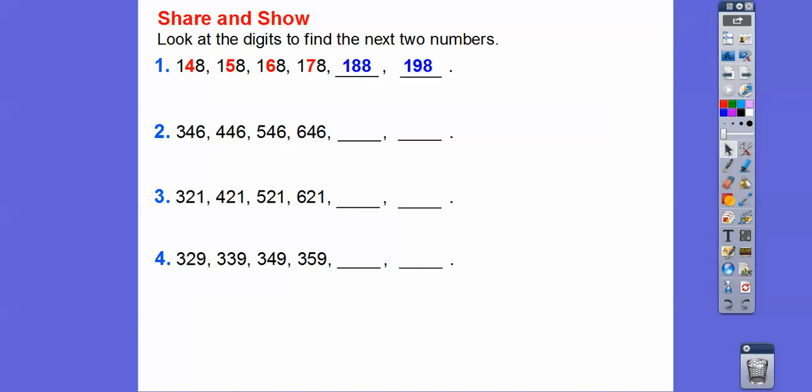Nothing's highlighted here, so we just got to see which one's changing. So 346, 446. So it looks like the hundreds digits are changing from a 3 to a 4 to a 546, 646. So this will be 746, and then 846.